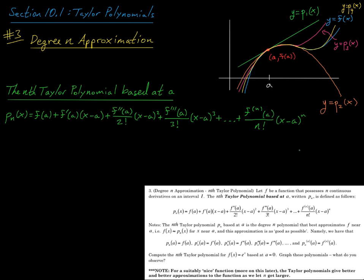This leads us to what we'll call the nth Taylor polynomial based at a, written pn(x), defined as follows: f(a) + f′(a)(x−a) + f″(a)/2!(x−a)² + f‴(a)/3!(x−a)³ + the fourth derivative of f at a over 4! times (x−a)⁴, and so on, until you get to the nth derivative of f evaluated at a over n! times (x−a)ⁿ.